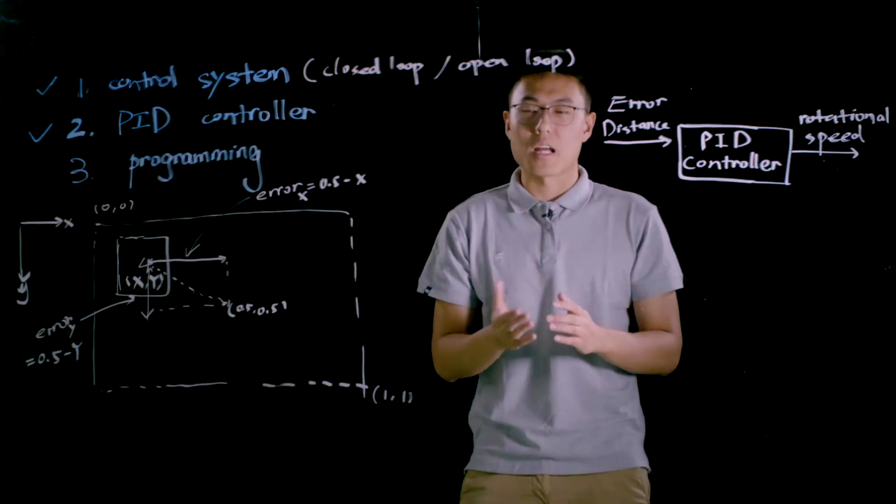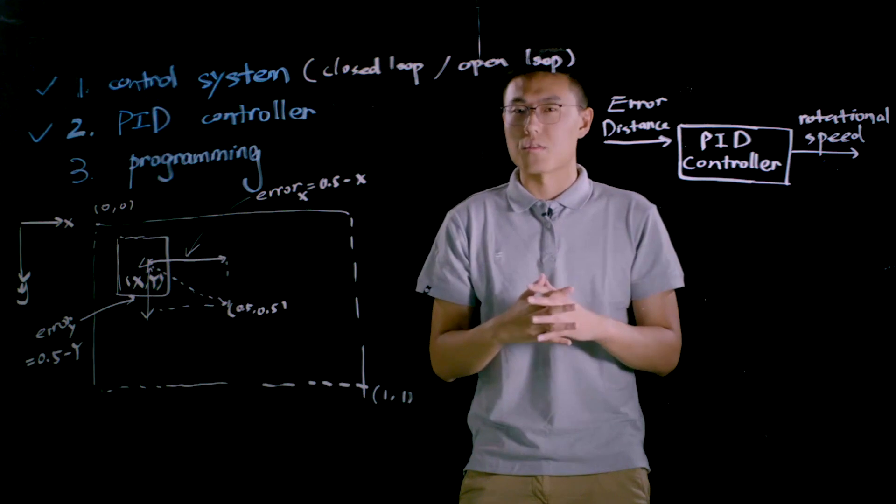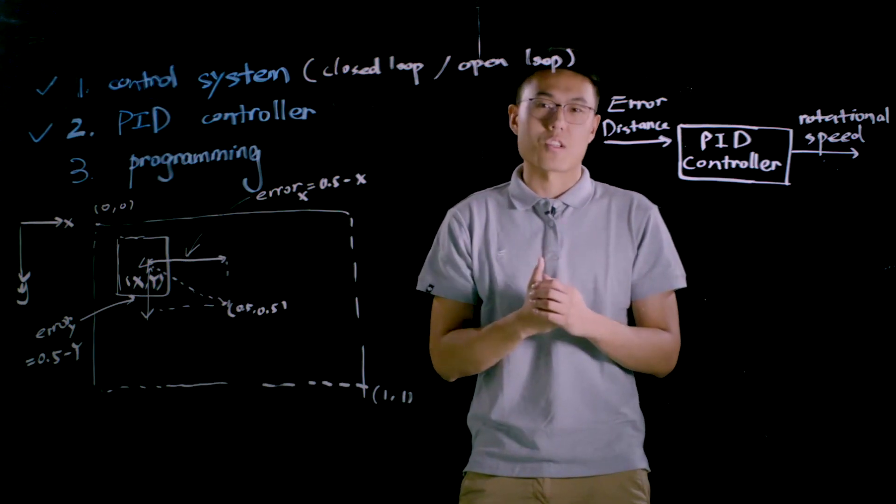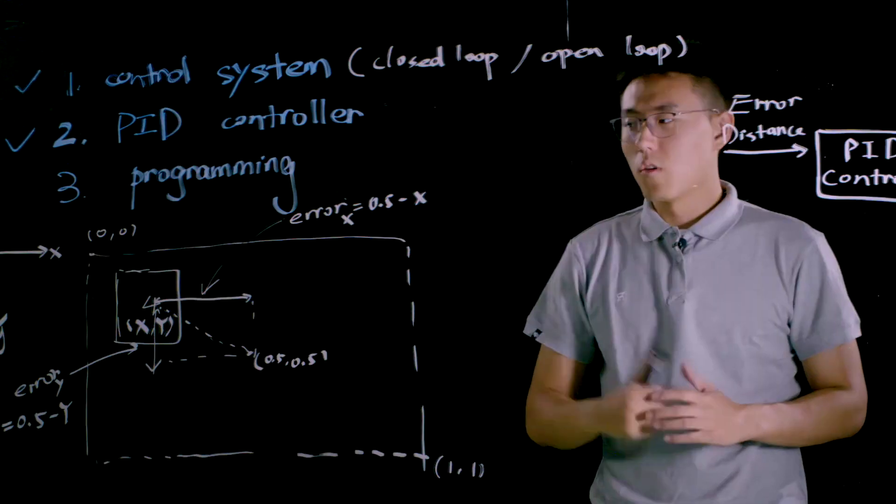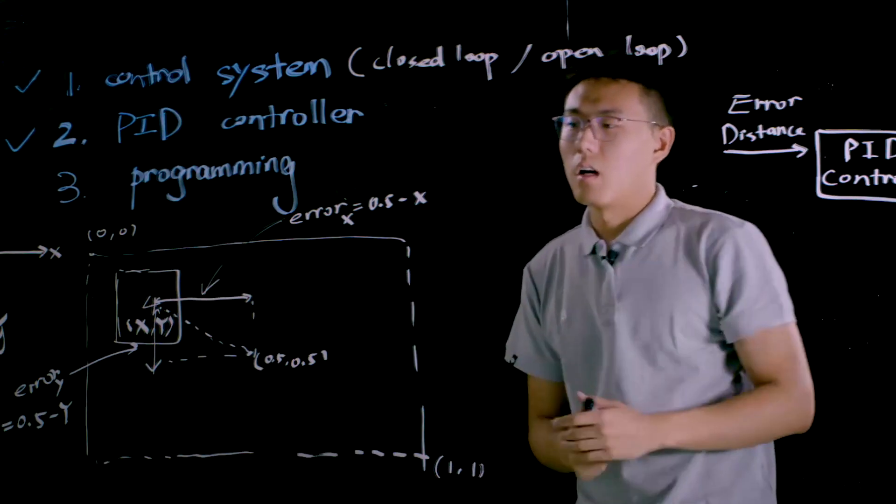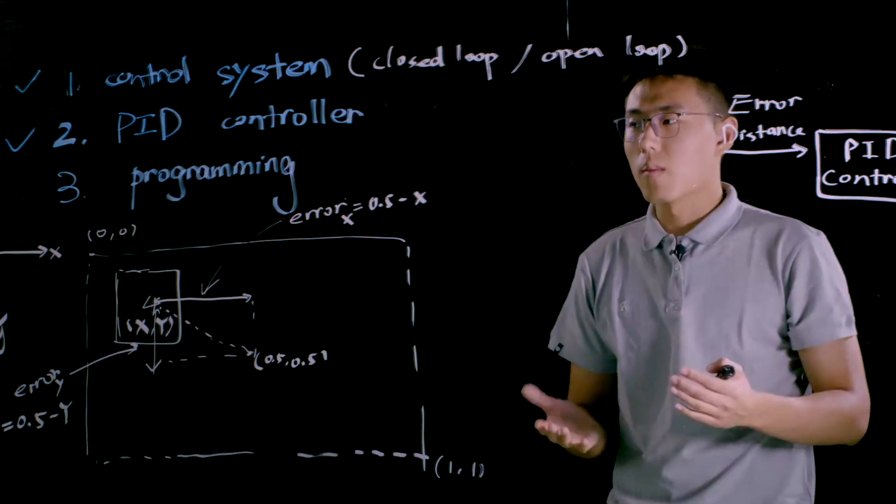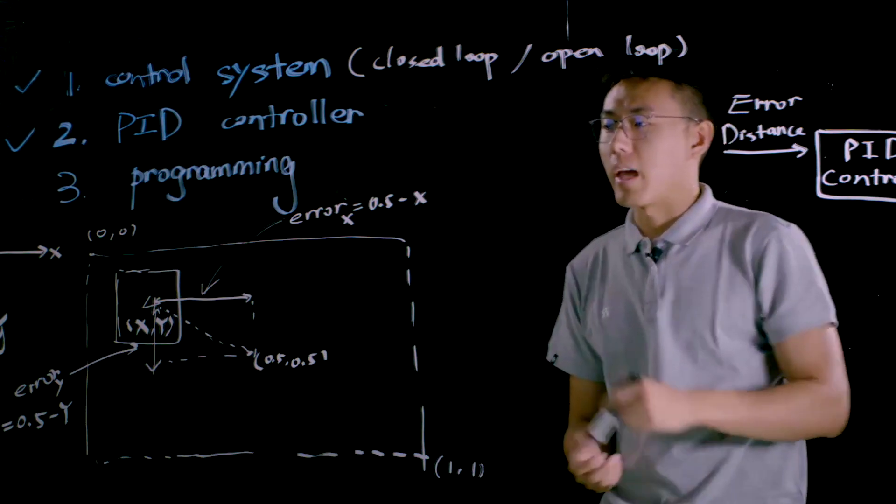Actually, PID controllers are not only used in robot control systems but also found in many other applications, such as smart refrigerators or hoverboards. So for example of object tracking, we need to know how the PID controller eliminates the error on x-axis.